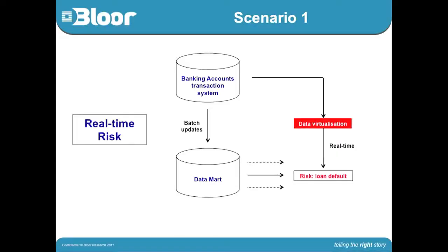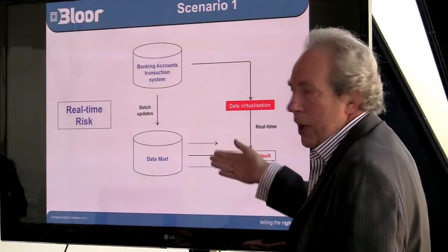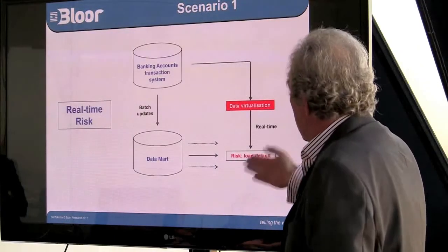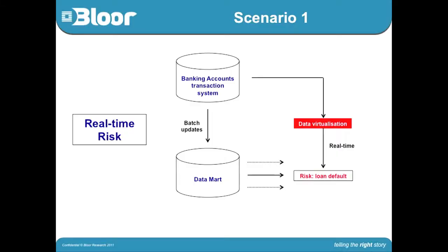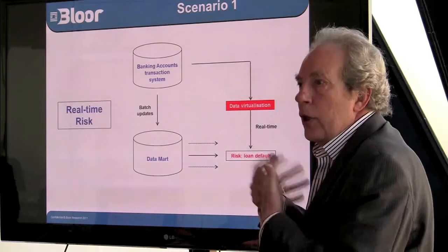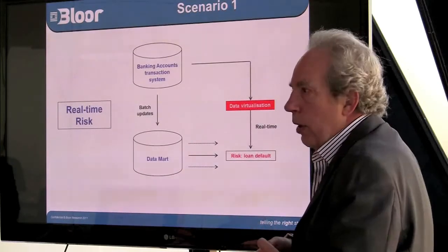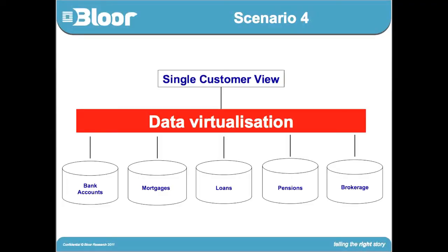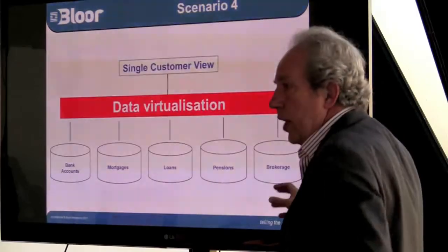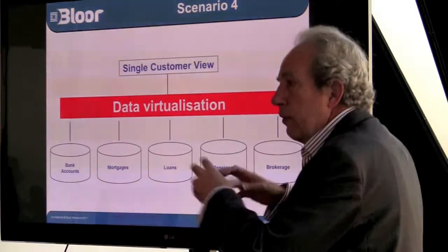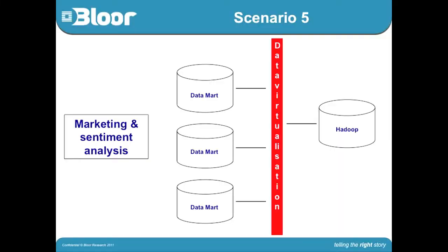Somebody comes along and says, 'I want to do risk management. I need real-time information across these two different systems to look at what's the potential risk in the case of a loan default.' You can use the data virtualization layer to actually bring that together to do real-time queries. Using data virtualization is also a fairly quick and easy way to get a single customer view, pulling information together from different sources.